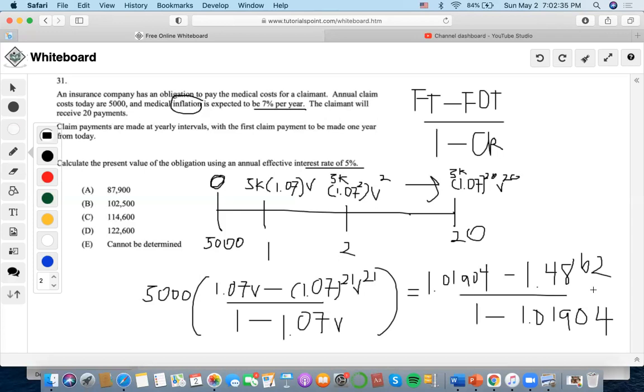Okay, now let's solve. So for this term, it's 1.01904 minus 1.4862 divided by 1 minus 1.01904. We get 24.53 multiplied by 5,000, and we end up getting 122,678.